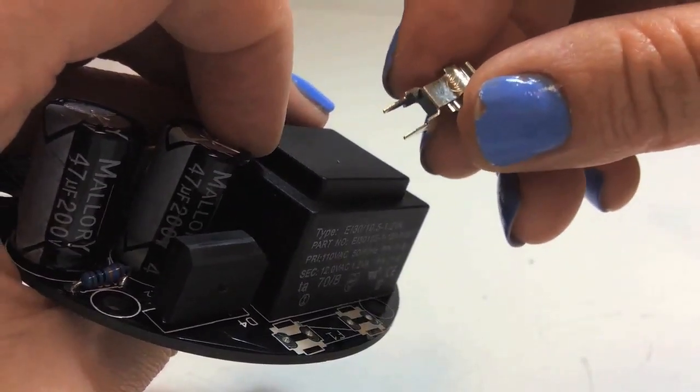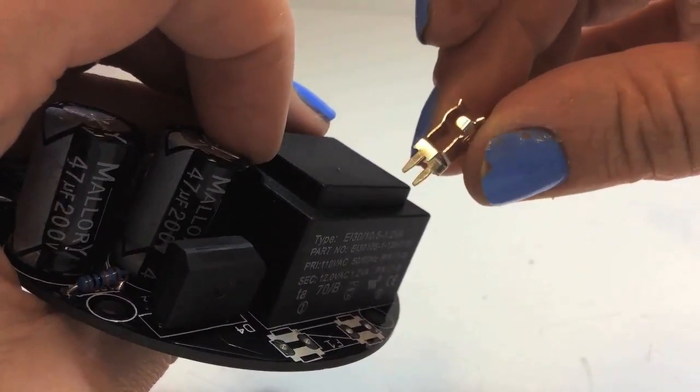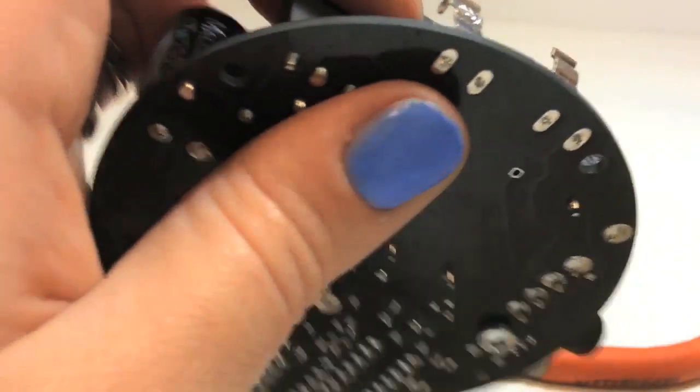Lastly, install the F1 fuse clips. Clip the fuse into the clips to help them stay in place while you solder.